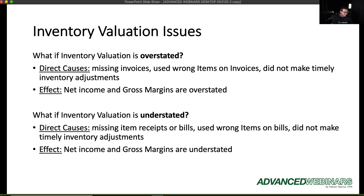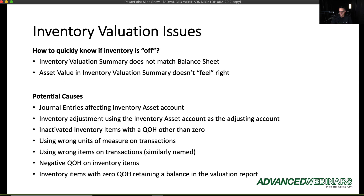If your net income is understated, you're probably paying less taxes than you should — and if you get audited, you'll get nailed. Your gross margins will feel much tighter, so you won't give discounts or be competitive in pricing, potentially losing deals out of fear of losing money. Understated inventory and net income also have negative effects when seeking financing, investors, or loans.